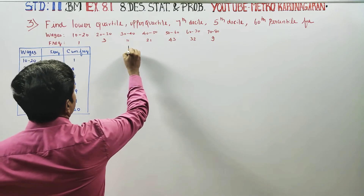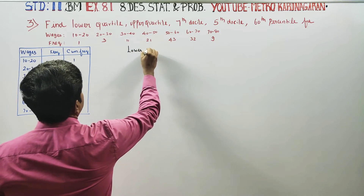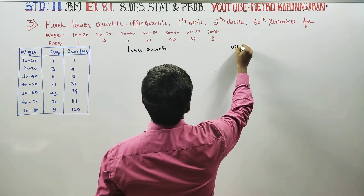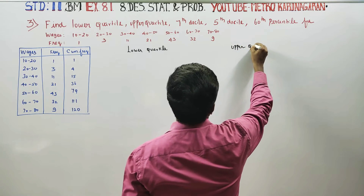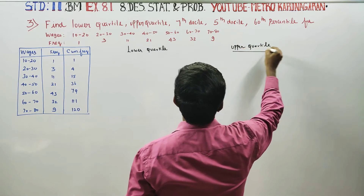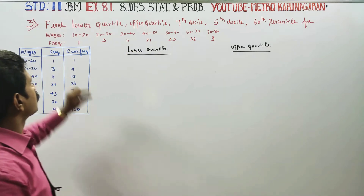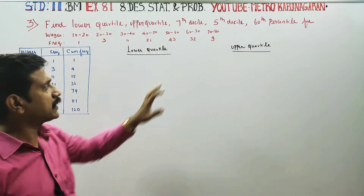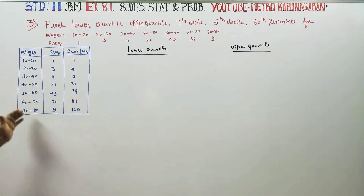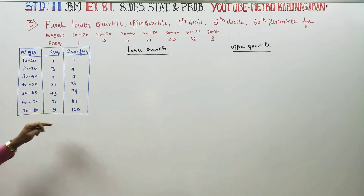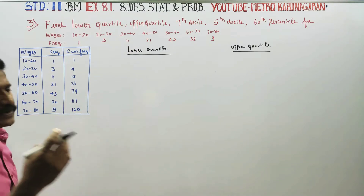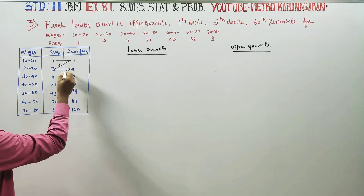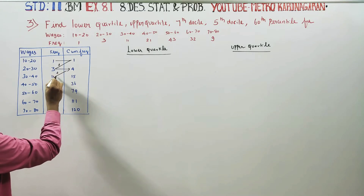First we will start with the lower quartile, followed by the upper quartile. This is the question. If you are horizontal, you will be vertical. The class values are 10, 20, 70, 80. We will get the cumulative frequency. The cumulative frequencies are: 1, 3, 400, 4, 11, 15, 15.